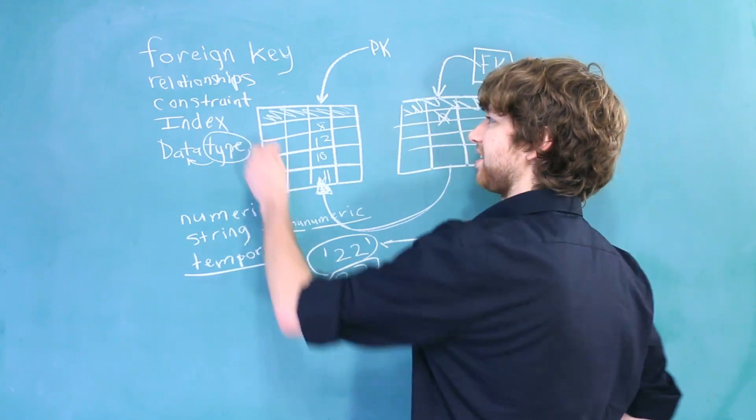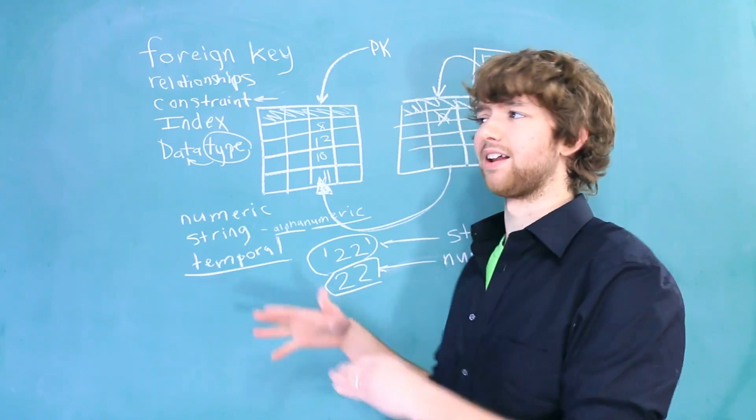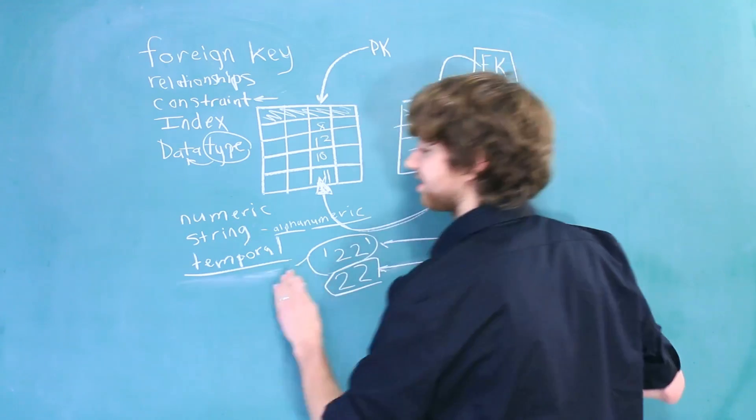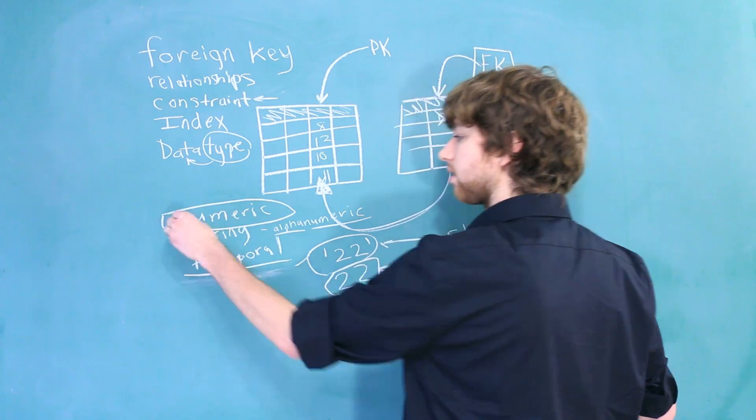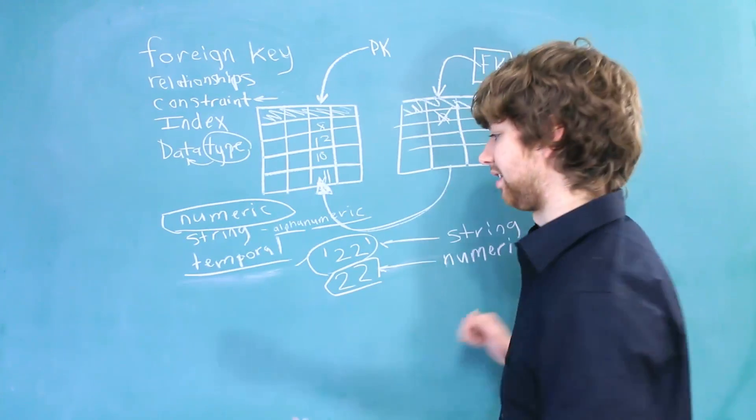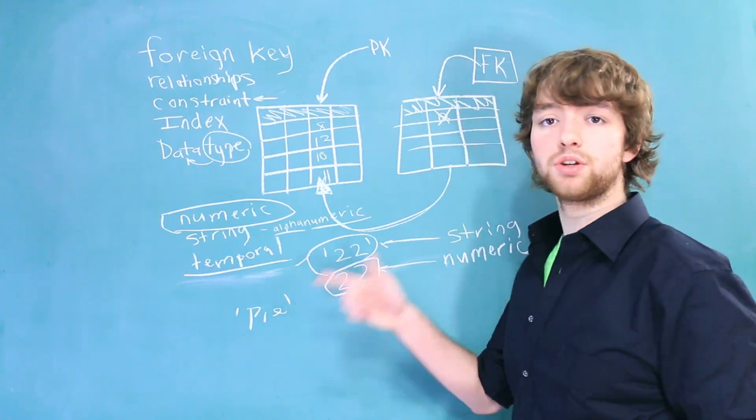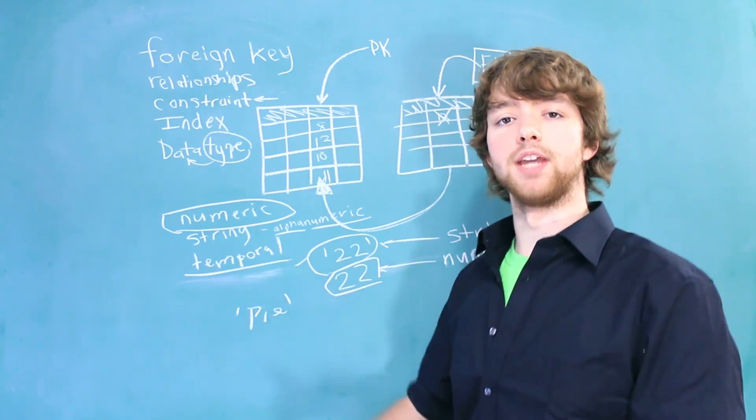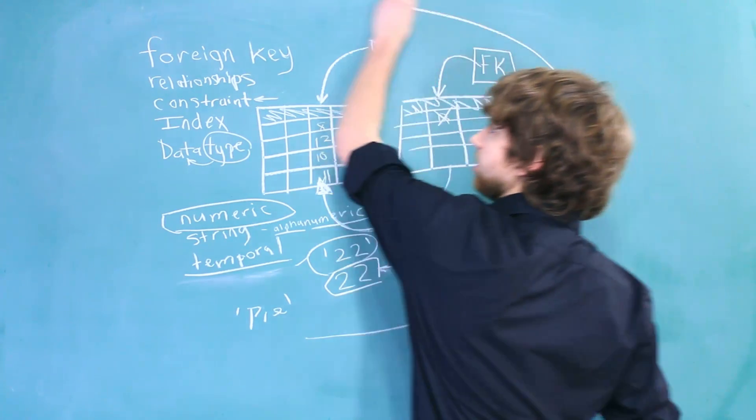Now, when you're talking about database constraints, you don't usually mean data types because that's kind of like a separate topic. But you can kind of think of them as constraints. Because if you labeled a column one of the numeric data types and you tried to put something in like pi, that's going to be rejected. So a data type is another way to protect our data integrity.